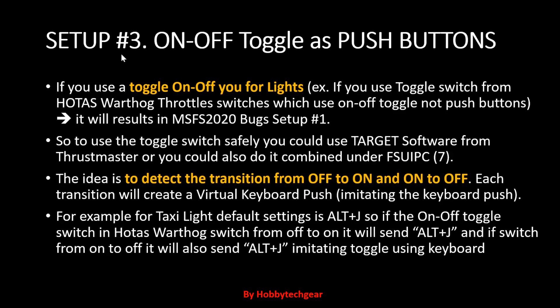Setup number three — the issues are similar to before with the on/off toggle used as a push button. If you have a toggle switch, like on a Thrustmaster Warthog throttle unit, there are a lot of toggle switches — four or five or more — that you can use for turning on lights like strobe light, nav light, taxi light. The problem is that using that toggle switch inside Microsoft simulators creates bugs, locking the increments and making them inaccurate.